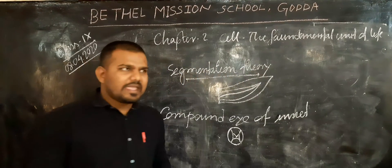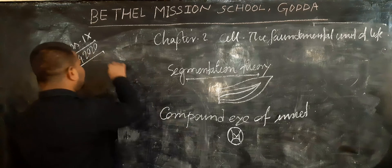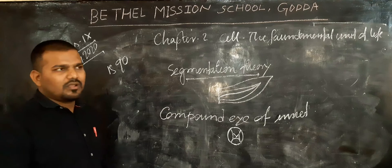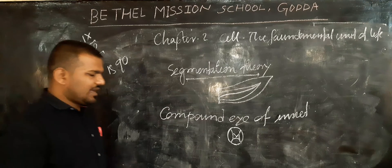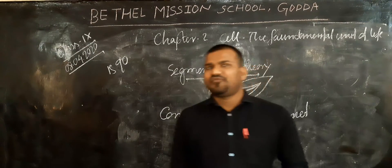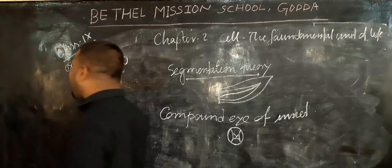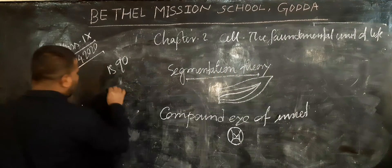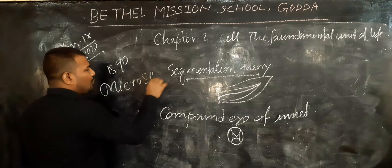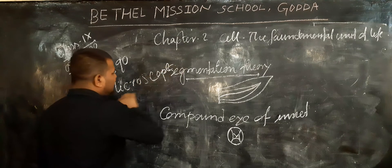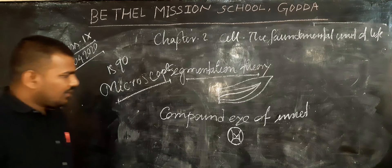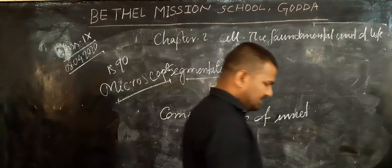But in the year 1590, two brothers called H. Janssen and Z. Janssen were the first to invent the microscope. It was invented by H. Janssen and Z. Janssen.